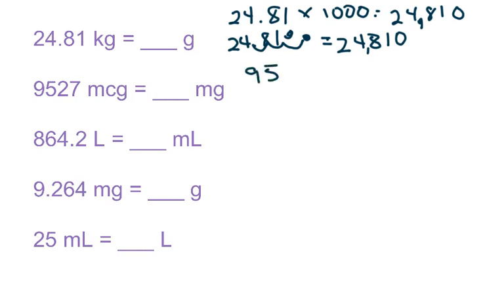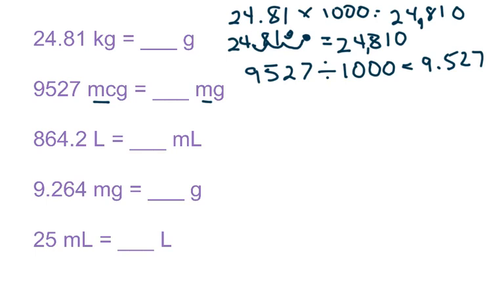Next, I have 9,527 and I'm going from a microgram to a milligram. This time I'm going up, so I divide by a thousand. On your calculator, it pops up 9.527. For metric to metric, you never ever round — whatever is behind the decimal stays there. If I'm moving the decimal, I start at 9527, the decimal is at the end, I go up to the left three places, and I get 9.527.